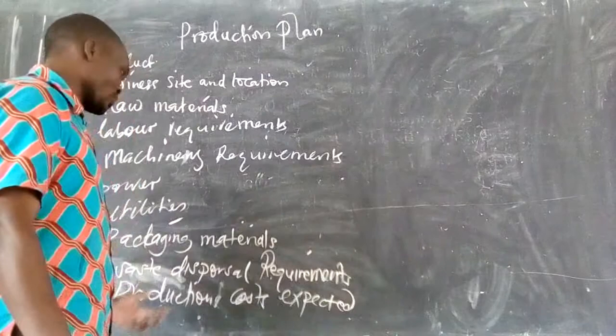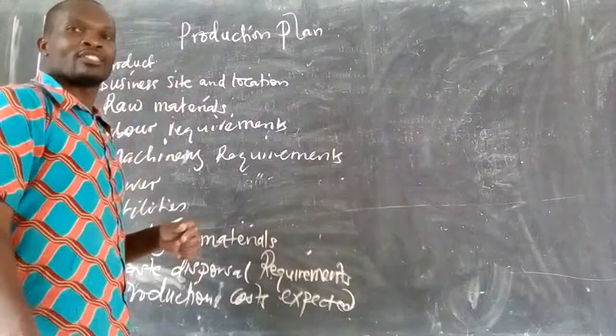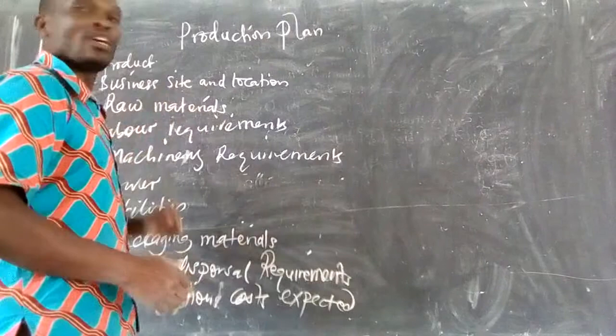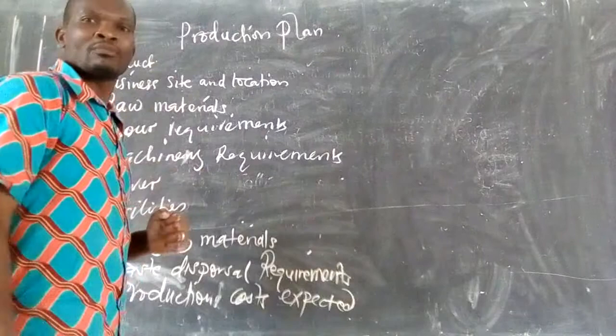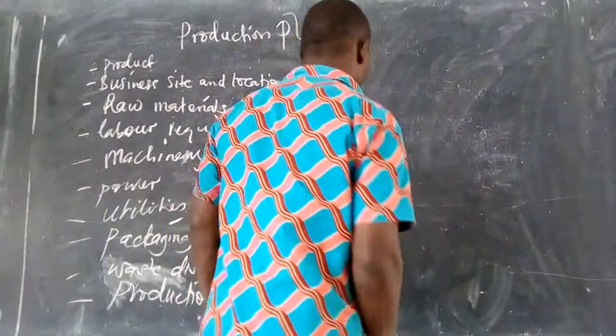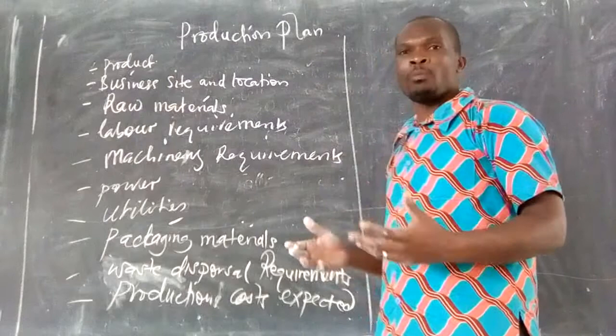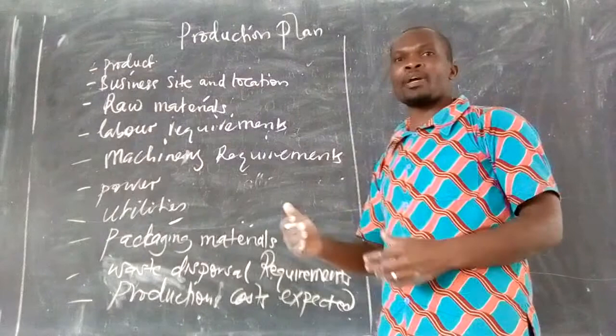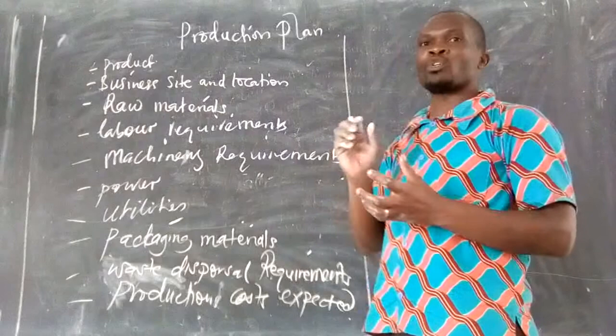In case you are told in Paper 2 of A-level, or Paper 1 of A-level, in the production section, and you are told to prepare a production plan — let's look at an example. They are saying you are operating a juice processing business in your community. Prepare a production plan for your business. What you do: give it a name, because the nature of the business has already been given. So all your work is to look for a name for the business.